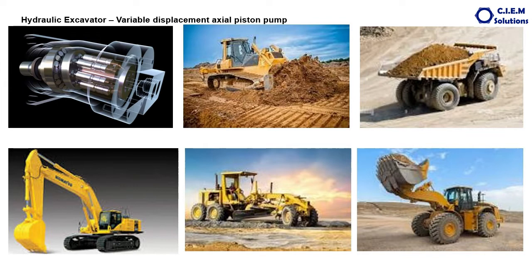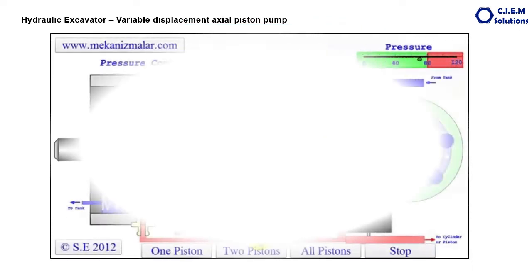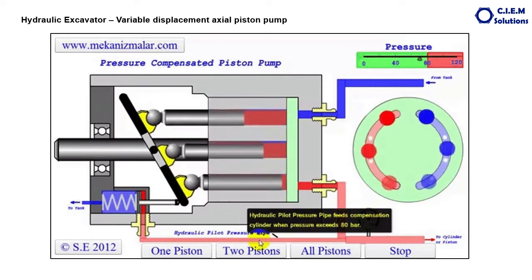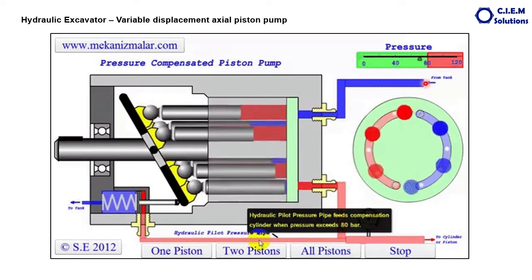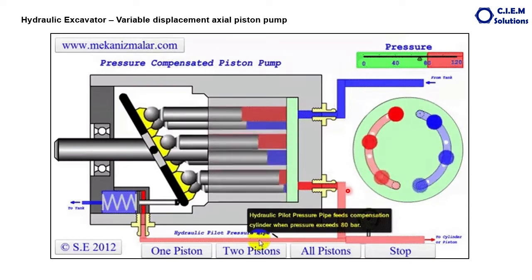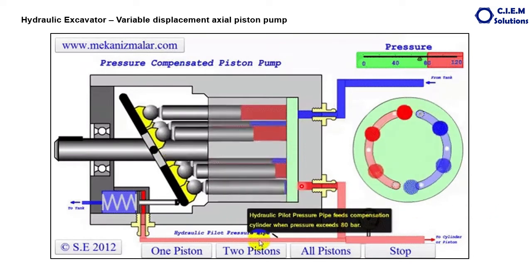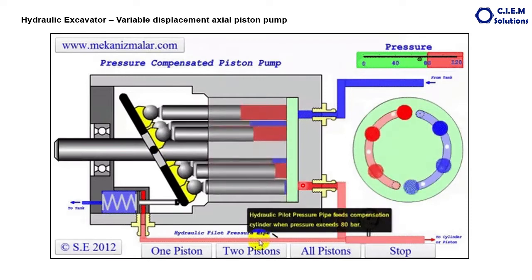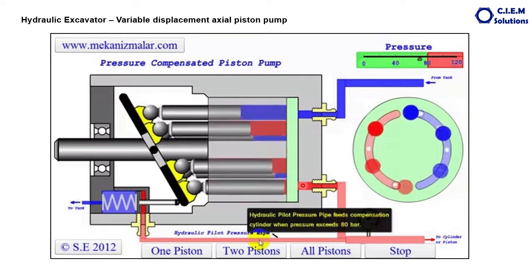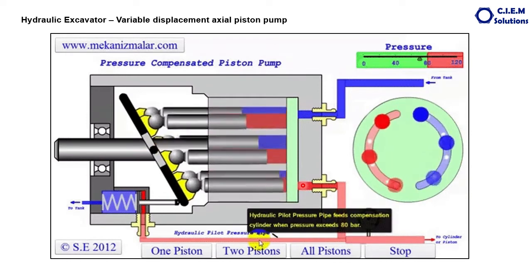Precisely speaking, the type of pump used in the hydraulic excavator is called the variable displacement axial piston pump. It is not a simple axial piston pump — it is the variable displacement type, which means the discharge of the pump varies depending upon the system's requirement. This animation shows: blue is the inlet for the pump and red is the outlet. The delivery volume of the fluid varies depending upon the system's requirement. That's why it is called the variable displacement axial piston pump.